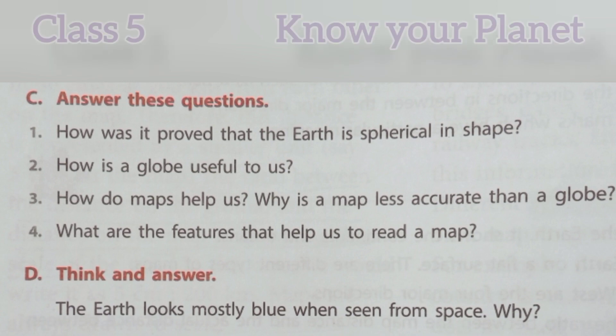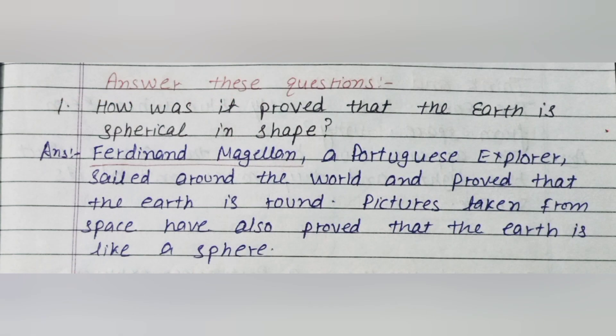First question: How was it proved that the earth is spherical in shape? Answer: Ferdinand Magellan, a Portuguese explorer, sailed around the world and proved that the earth is round. Pictures taken from space have also proved that the earth is like a sphere.